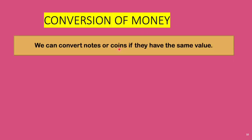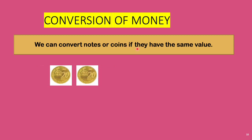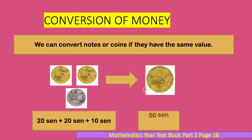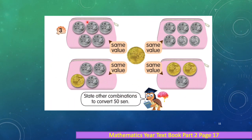Conversion of money — we can convert notes or coins if they have the same value. Look at this: two pieces of 20 cent coins and one piece of 10 cent coin is equal to one piece of 50 cent coin. Now look at this diagram — state other combinations to convert 50 cents. The first: five 10-cent coins is the same value as 50 cents. Also the same value as four 10 cent coins and two 5 cent coins.